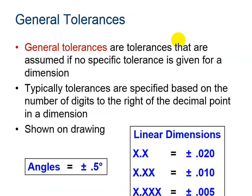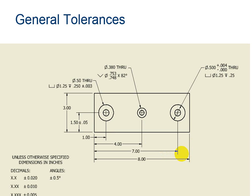General tolerances are tolerances that are assumed if no specific tolerance is given. We don't have to write a tolerance for every single dimension on the sheet. In fact, when you have a lot of dimensions on the sheet, it can really clutter your blueprint. So typically, tolerances are specified based on the number of digits to the right of the decimal point, and then you include a legend at the bottom of your blueprint. For example, using these general tolerances, a linear dimension specified with the precision of one digit to the right of the decimal point is specified to be manufactured within a variation of 2 hundredths larger or smaller than the specified dimension.